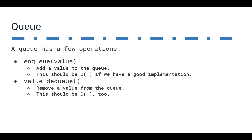A queue has just a few operations. The ones we really care about are enqueue, where we add a value to the queue — this should be constant time if we have a good implementation. And a dequeue operation should remove a value from the queue, and this should also be constant time. So if we use a queue effectively, we can add to one side and remove from the other side pretty effectively.